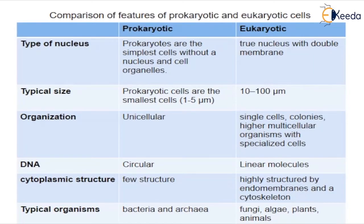Let us revise about prokaryotic and eukaryotic cells. A cell is a compartment where all the activities of life take place. There are two basic types of cells in nature: prokaryotic cells and eukaryotic cells. Prokaryotic cells are the simplest cells without a nucleus and cell organelles. They are the smallest cells, of size 1 to 5 micrometers, unicellular in organization, with circular DNA and very few cytoplasmic structures. The typical organisms are bacteria and archaea.